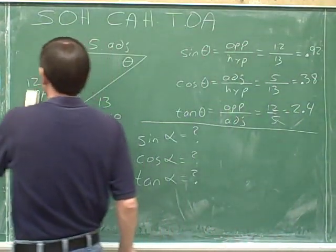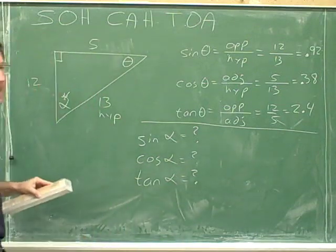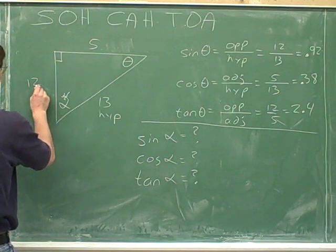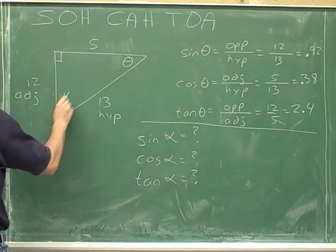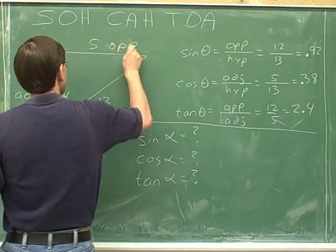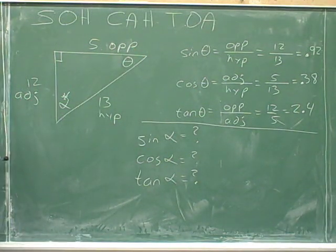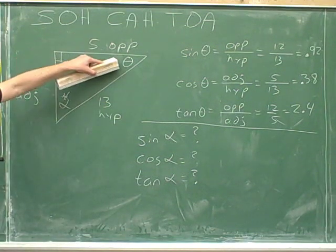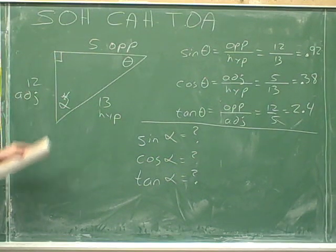I'm going to put the asterisk down here to remind myself that now I'm focusing on alpha. Also, I need to erase the labels for opposite and adjacent, because when you change angles, you also change who's opposite and who's adjacent. Now the 12 is adjacent to alpha, and the 5 is opposite to alpha. This side was adjacent to theta but it's opposite to alpha, and the 12 side was opposite to theta but it's adjacent to alpha.